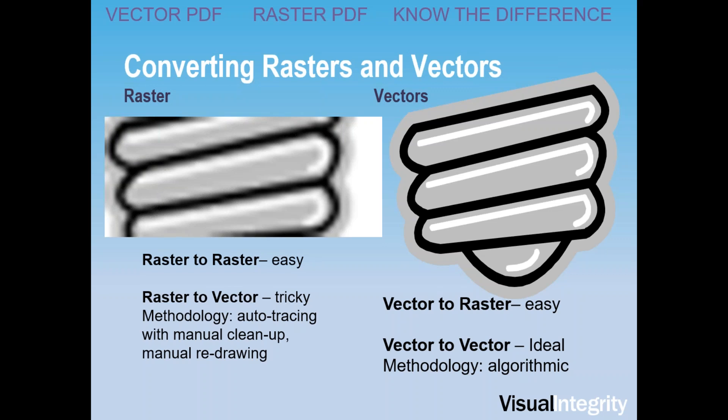Auto-tracing is the only real approach for raster to vector. It works with simple drawings, and you can find auto-tracing solutions in Adobe Illustrator, some CAD programs, and independent applications. But every time you use raster-to-vector, you tend to need to do manual cleanup for probably 20%. Sometimes it's just easier to redraw using the raster file as an underlay. Vector to raster is also easy — you're basically taking a photocopy of the file. Vector to vector is the ideal methodology: if you have computer-generated vector files, you can use software to automatically extract all geometry, text, and data, and present it in the format you need with perfect accuracy.